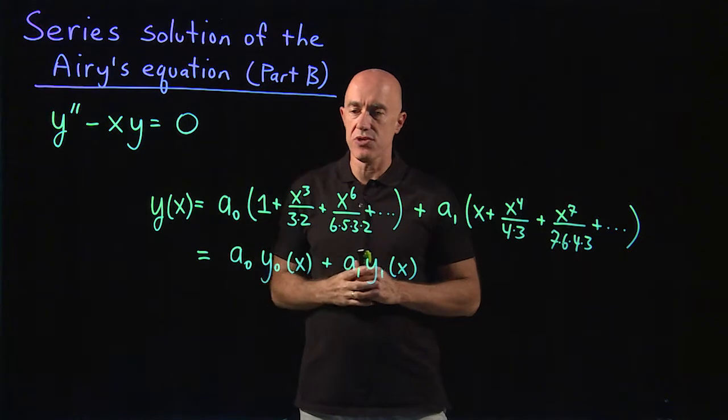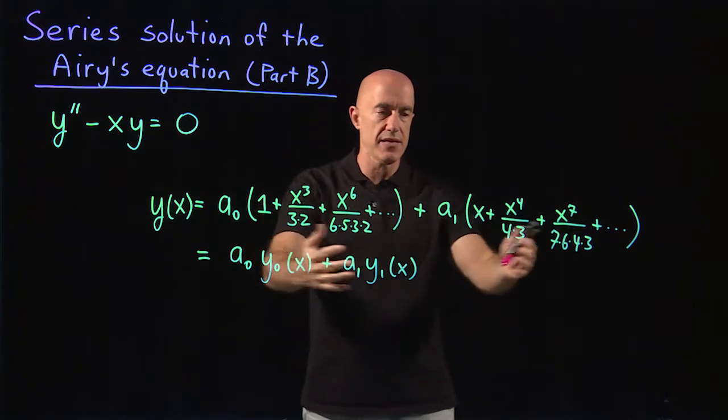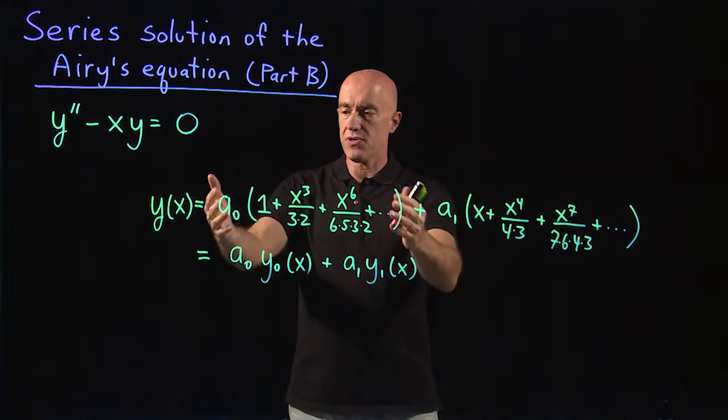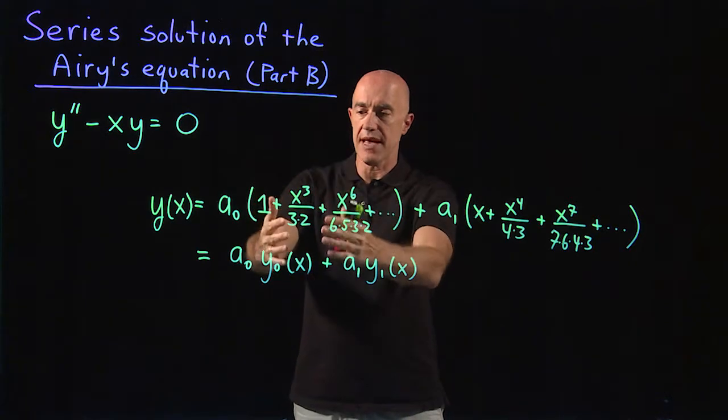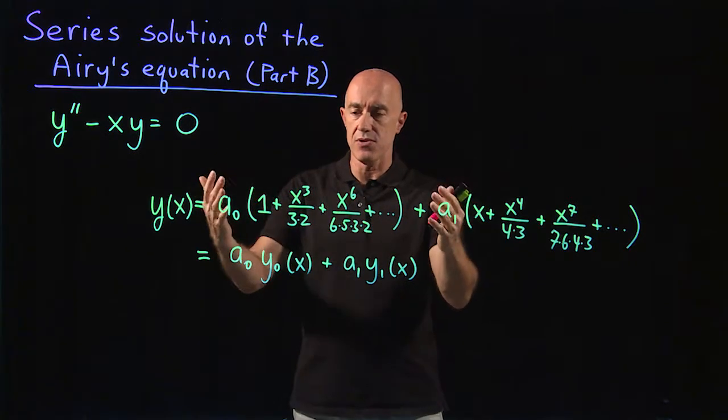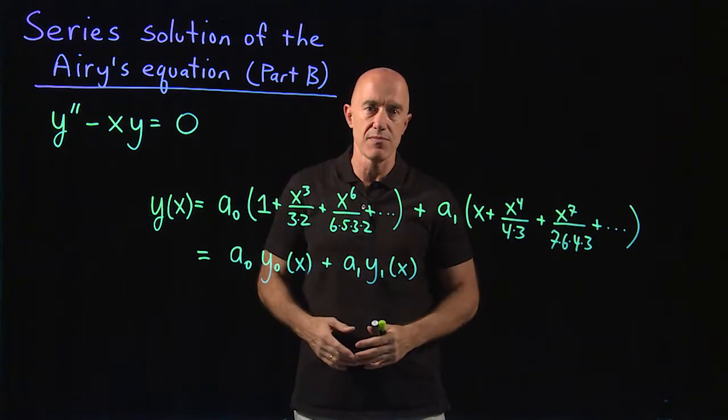We did a series solution ansatz and obtained two independent series. The first one multiplied by the free constant A0: 1 plus x cubed over 3 times 2 plus x to the 6 over 6 times 5 times 3 times 2, etc.